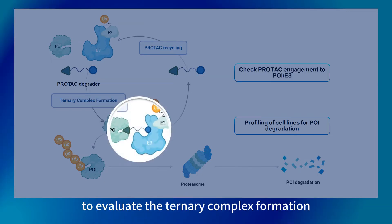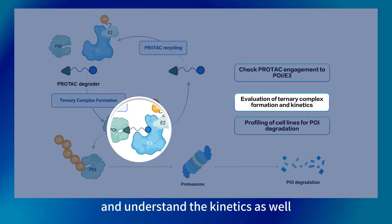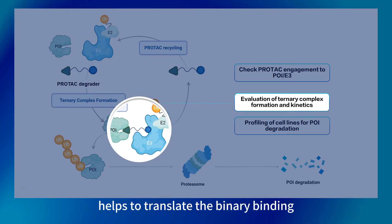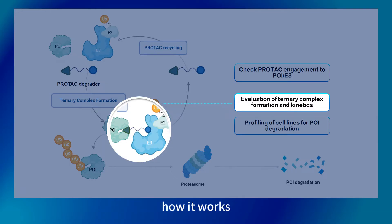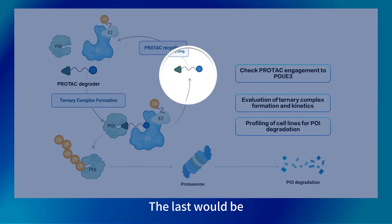The third would be to evaluate the ternary complex formation and understand the kinetics as well. This sometimes helps to translate the binary binding to the ternary binding — how it works, whether it is sufficient, and whether it is stable.